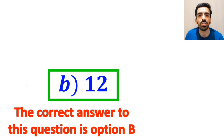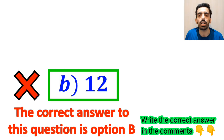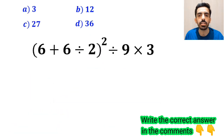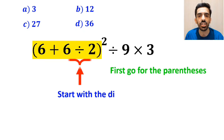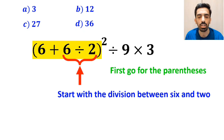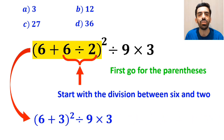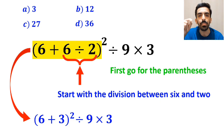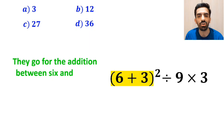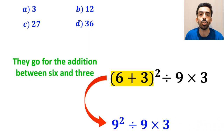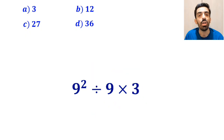However, this answer is absolutely wrong. Some other people, to solve this question, first go for the parentheses and start with the division between 6 and 2. So instead of that expression, they write (6 + 3)² ÷ 9 × 3. In the next step, they go for the addition between 6 and 3, simplifying to 9² ÷ 9 × 3.